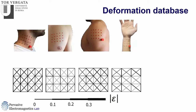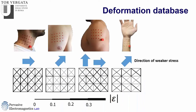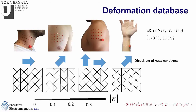We have different maps. The neck is the most stressful region. The thorax is the least stressful region. The arrows indicate the direction where the stress is least effective — where the line thickness is smallest. So if you apply an antenna parallel to that direction, it will experience less stress. The maximum stress is 30% — not small — in the case of the neck.